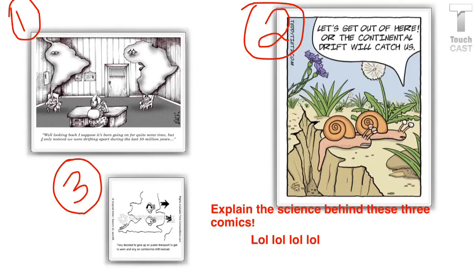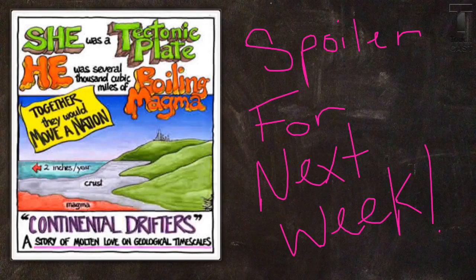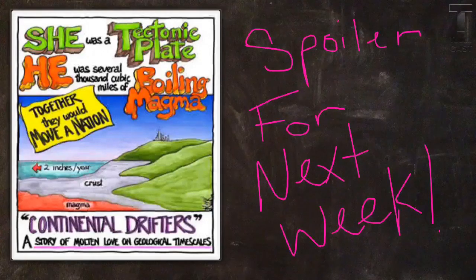Now for a little science comedy — take a second and look at these three comics. Explain the science behind them in your journal. We'll be looking for a brief written description of each comic, followed by your explanation of the science behind it. Here's one: 'She was a tectonic plate. He was several thousand cubic miles of boiling magma. Together, they would move a nation. Coming next week — Continental Drifters, a story of motion love on geological timescales.'